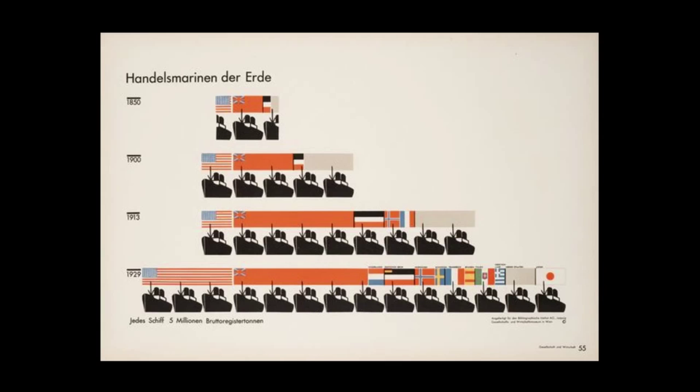Even after Neurath's death in 1945, his work lived on through the efforts of his wife, Mary Riedemeister, as well as through his book, From Hieroglyphics to Isotype. The isotype itself was a grandparent to the pictographs now used in public spaces such as bus terminals, airports, and libraries.